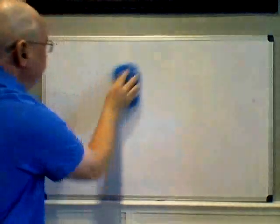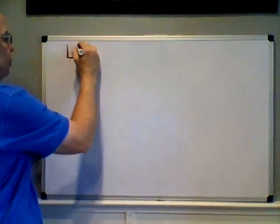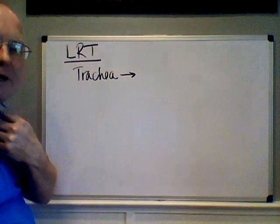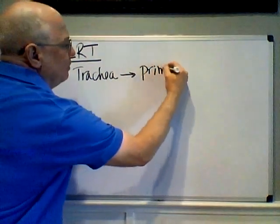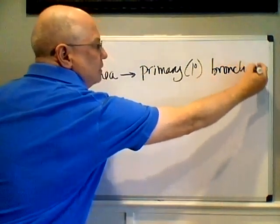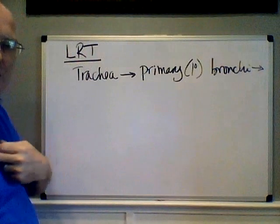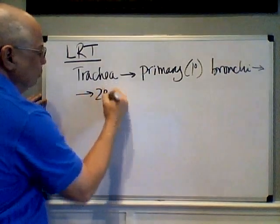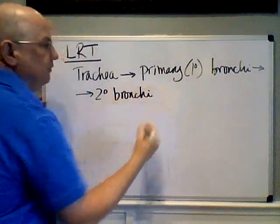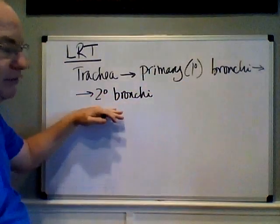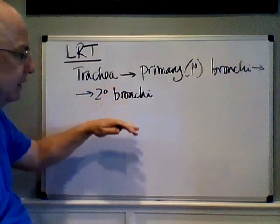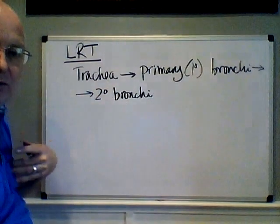The lower respiratory tract picks up where the upper respiratory tract leaves off. It starts at the trachea — the windpipe. Once air passes through the larynx, it enters the trachea, then goes through the primary bronchi — one for each lung. From the primary bronchi it goes into the secondary bronchi, one for each lobe of the lung. The right lung has three lobes and the left lung only has two, giving us a total of five secondary bronchi — three on the right, two on the left.